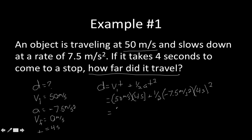So we have distance equaling 50 meters per second times 4 seconds, plus one-half times negative 7.5 meters per second squared times 4 seconds squared. Plugging that into the calculator, we get right around 140 meters to stop. Now think about what would happen if the acceleration wasn't negative — this part would be a positive number and you'd end up adding instead of subtracting, which just wouldn't make sense. So remember: when something is decelerating, you have to use a negative acceleration.